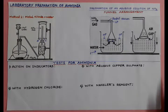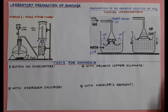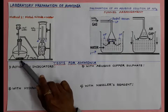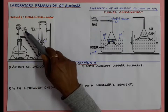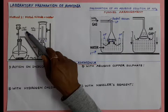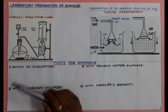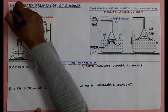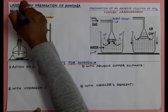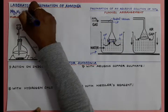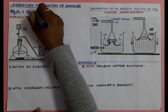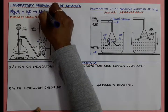Namaste students. This is the second method to prepare ammonia in the laboratory. Here, magnesium nitride is taken in the round bottom flask and hot water is added with the help of a thistle funnel. When hot water is added, magnesium nitride reacts and forms magnesium hydroxide and ammonia.